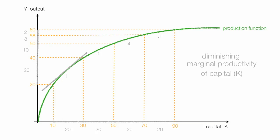So the slope of the line is less or smaller as we move up the production function, meaning adding more capital, we get less and less output as we add more capital, less marginal output.